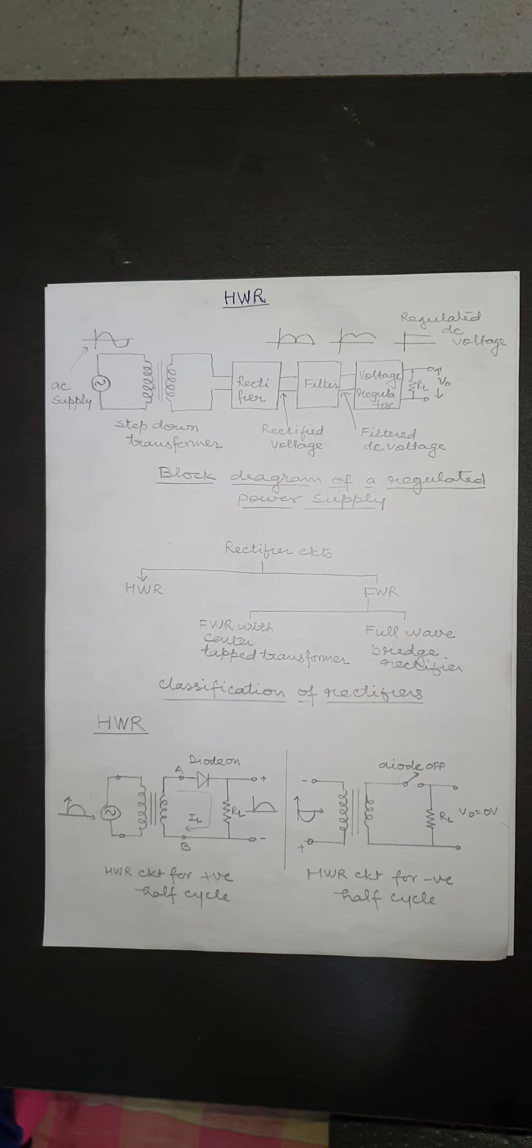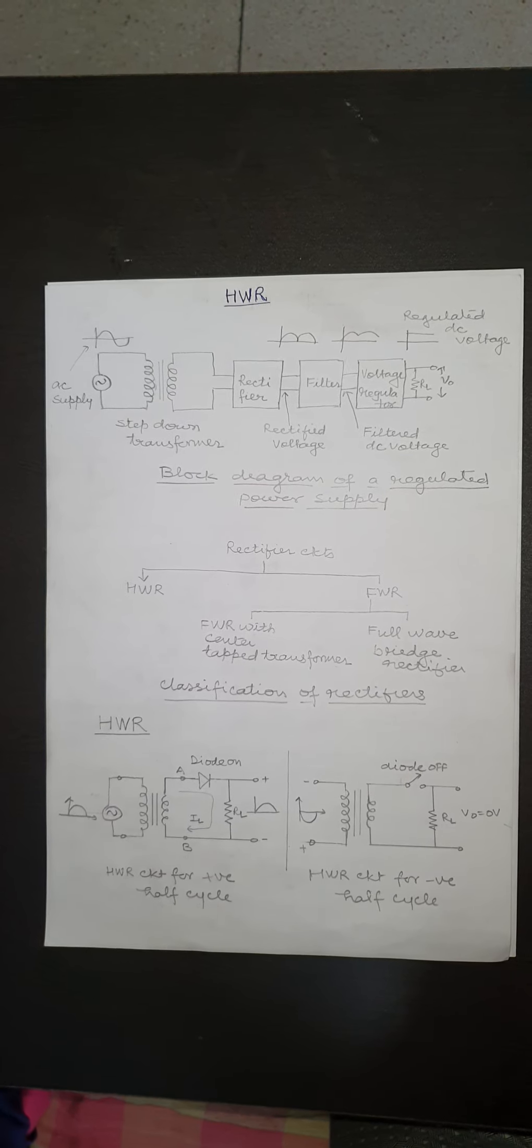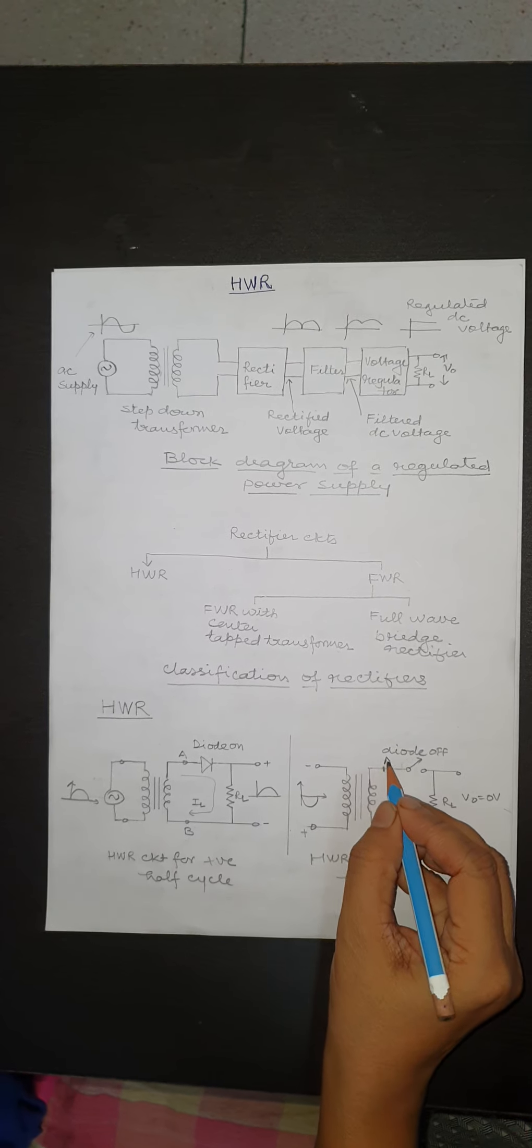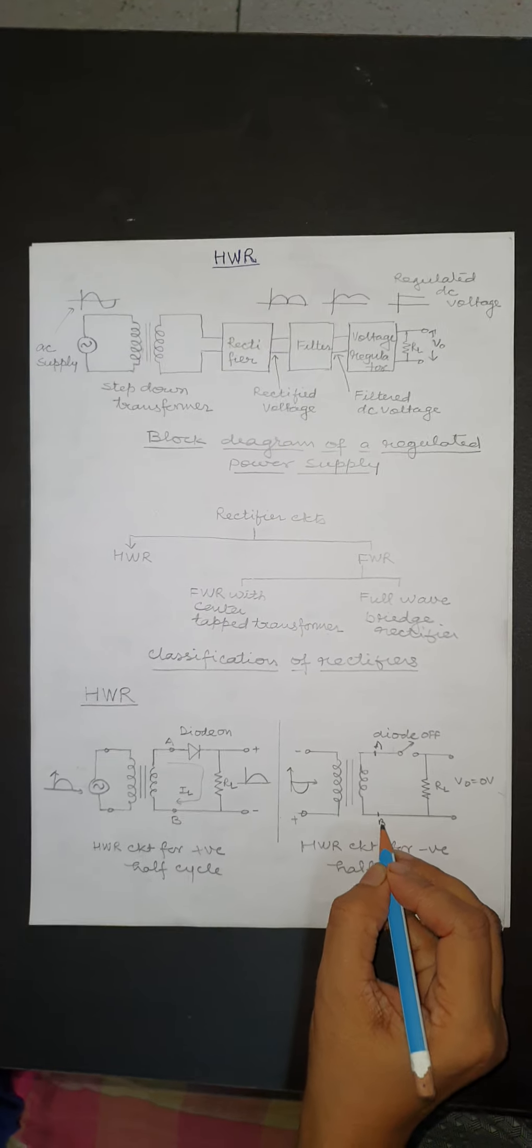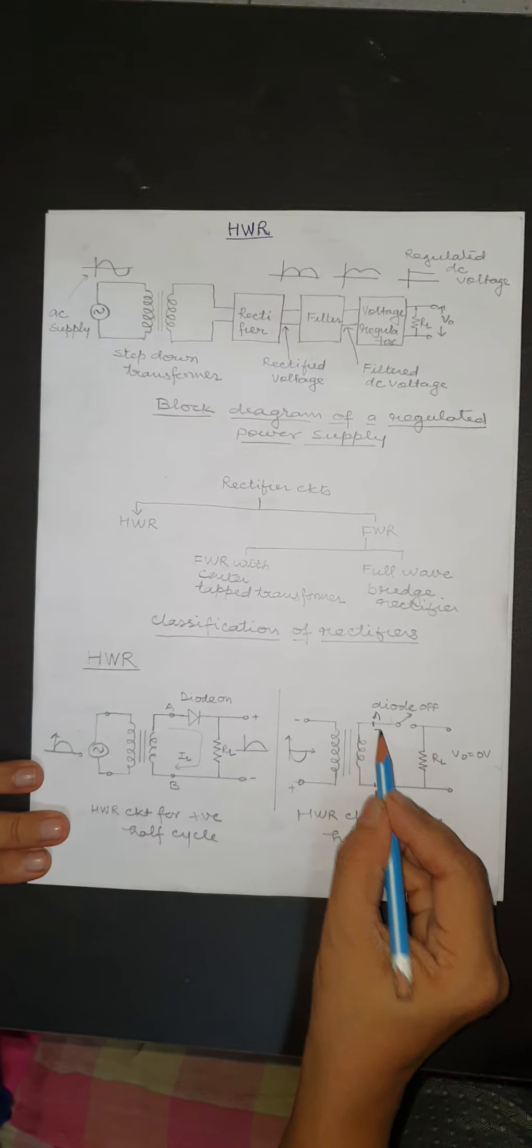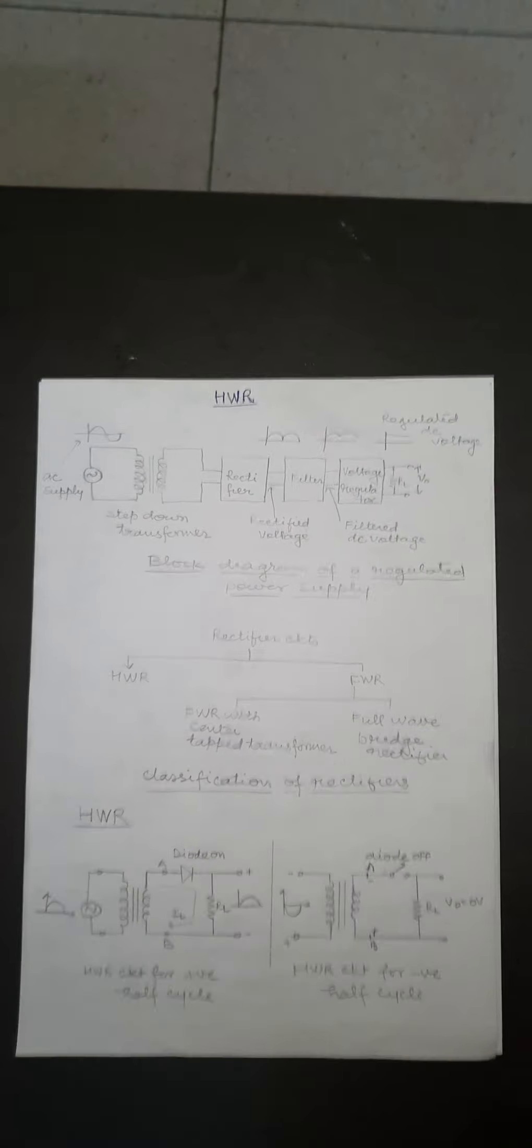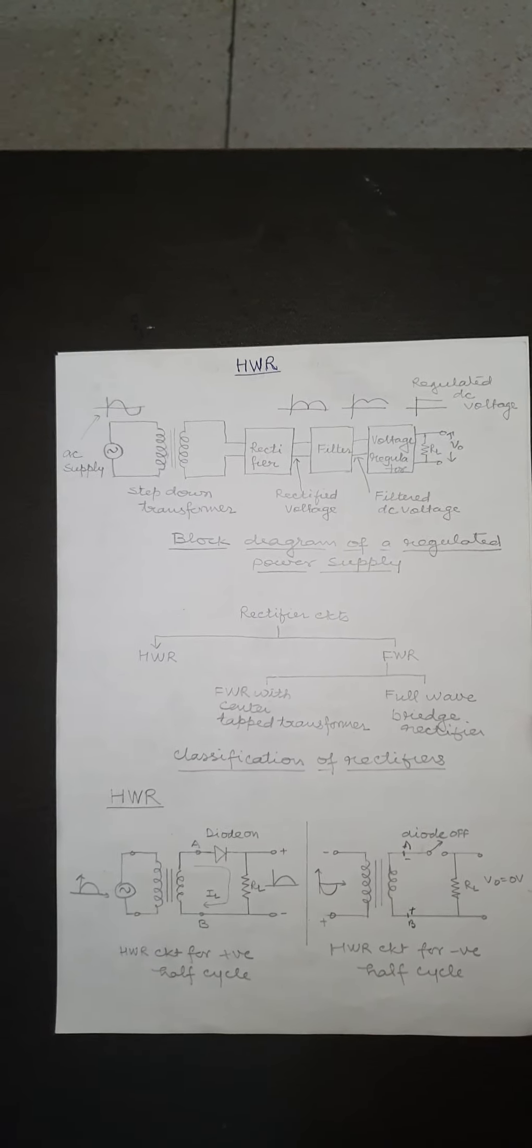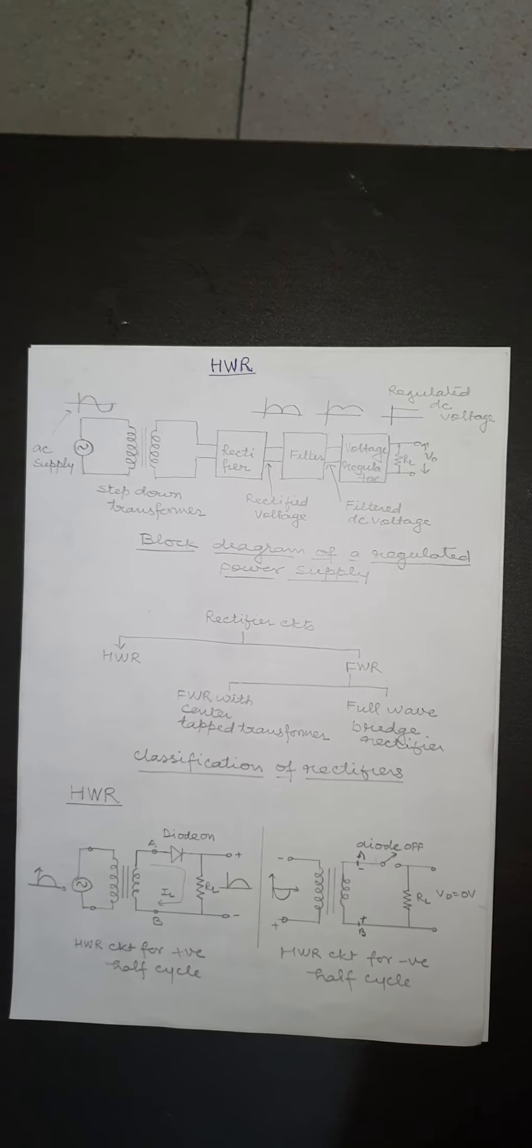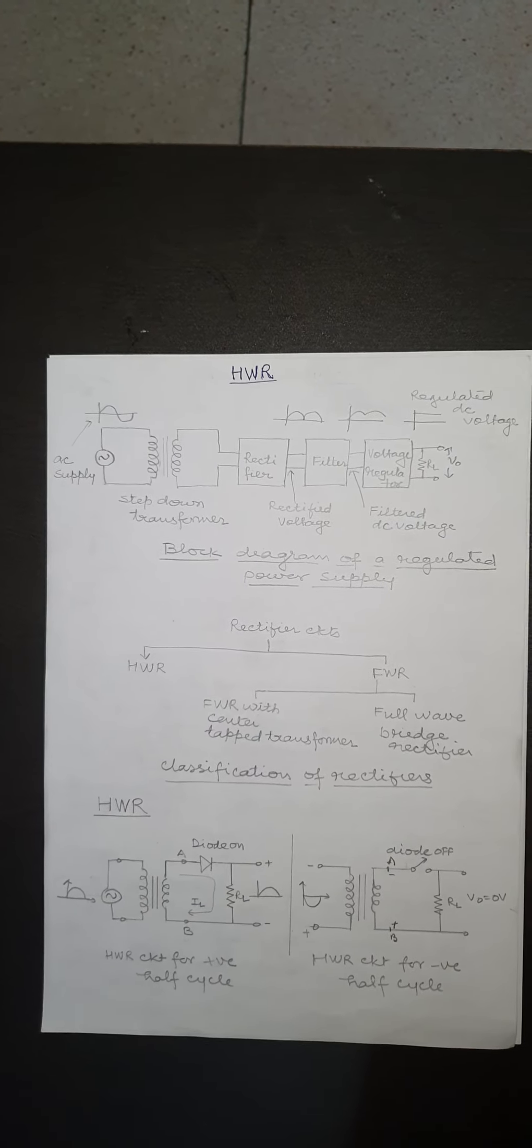During negative half-cycle, the secondary voltage VAB is negative, that is A is negative with respect to B. Hence diode is reverse biased and it offers very high resistance or we can replace it by an open circuit switch. The load is disconnected from secondary, hence the load current is zero and the output voltage is also zero.